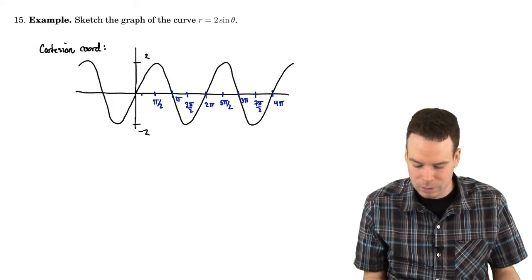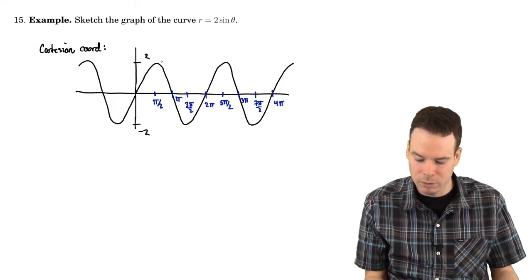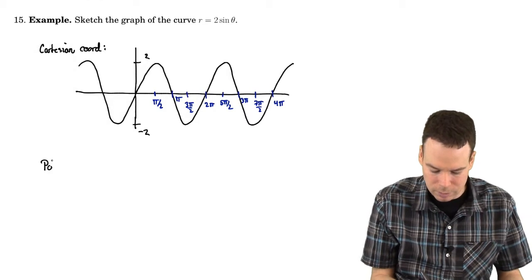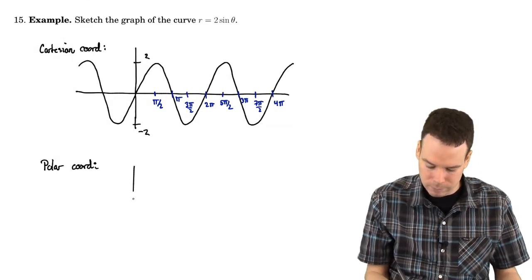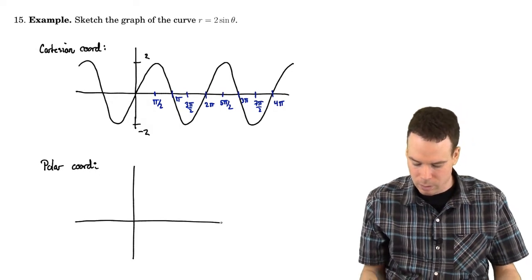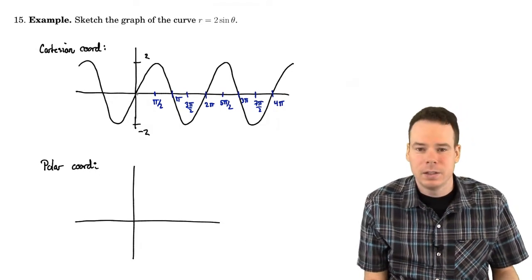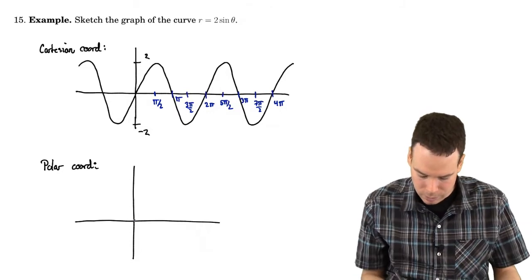As theta increases from 0 to pi by 2, I see my r value increasing. So now I'm set to plot this in the polar coordinate system. So let's look at the polar coordinate system. When theta is 0, r is 0. So I'm right here.